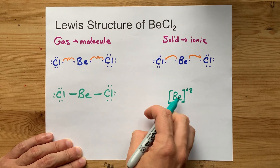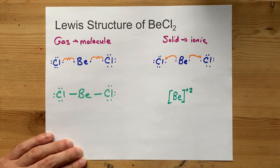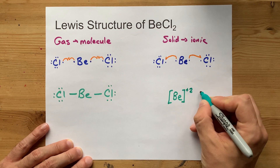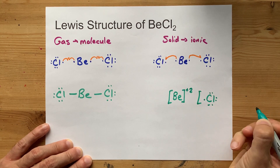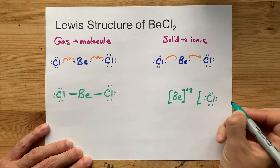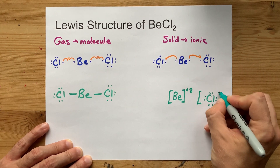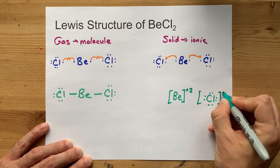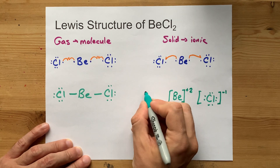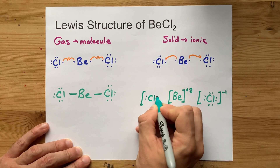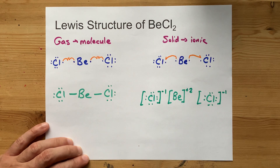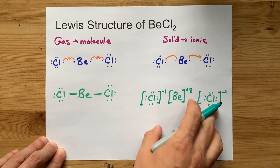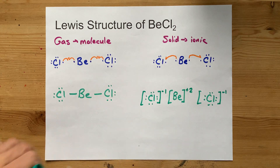We put square brackets around ions in ionic Lewis structures. The chlorines, which had their original seven electrons, now each have an extra electron from beryllium. Don't forget each now has a -1 charge because of the extra electron. Copy it out a second time on the other side because there are two of them. This is the complete ionic Lewis structure for BeCl₂.